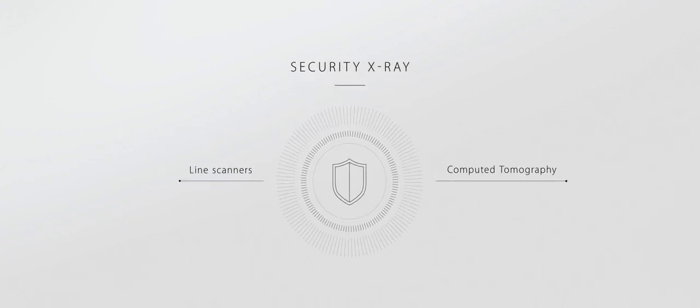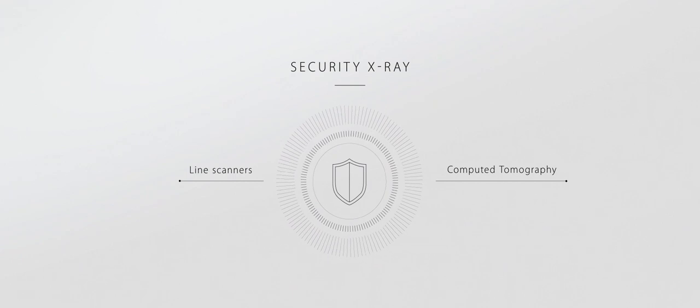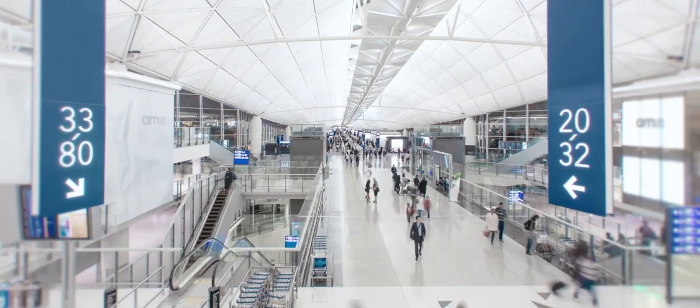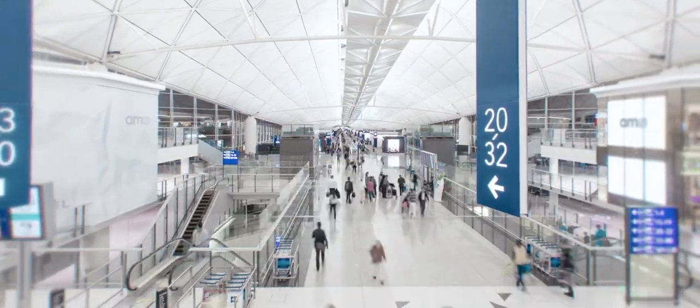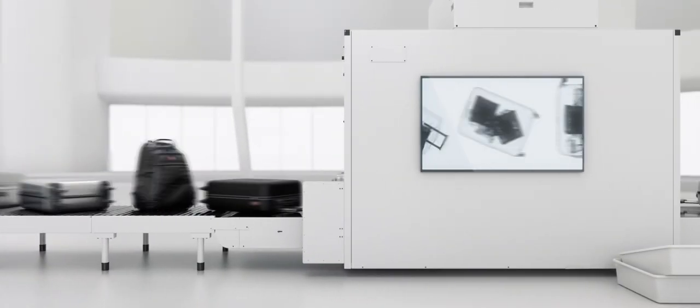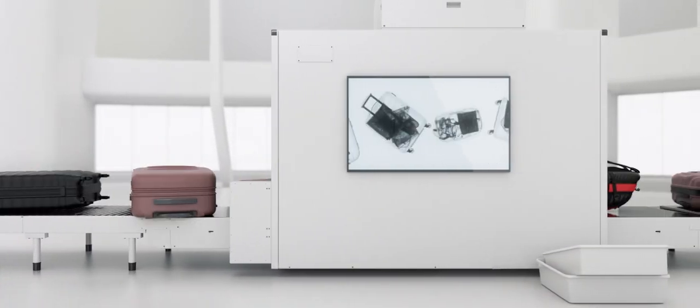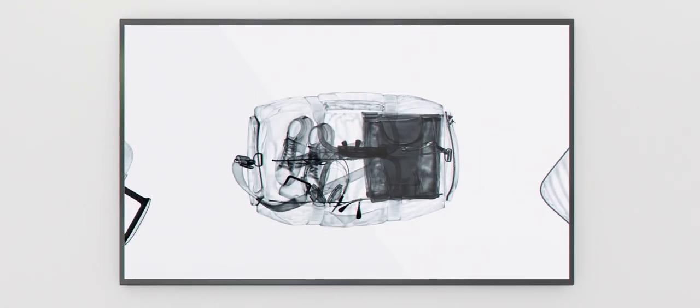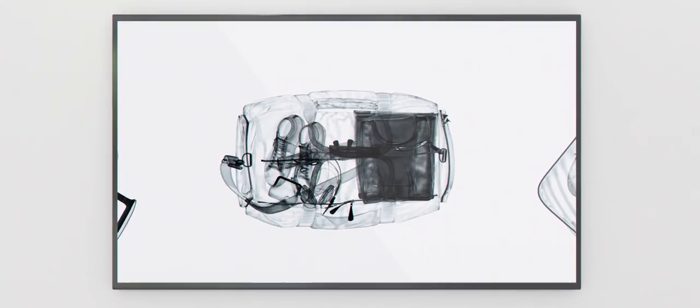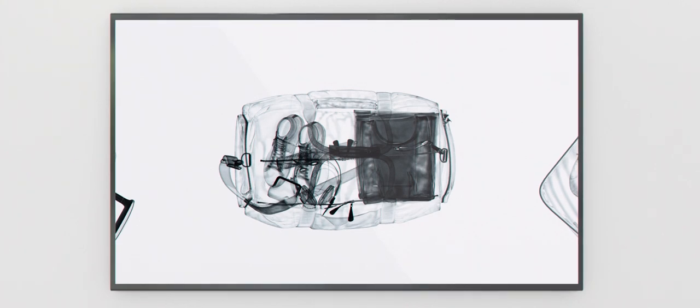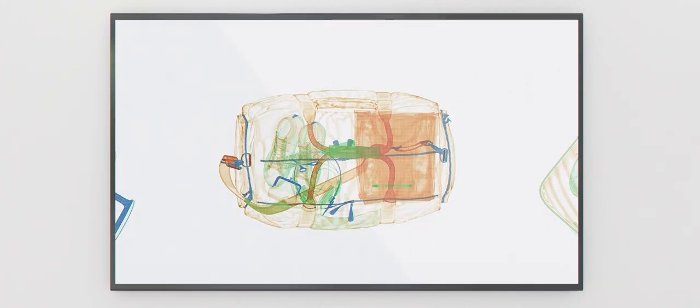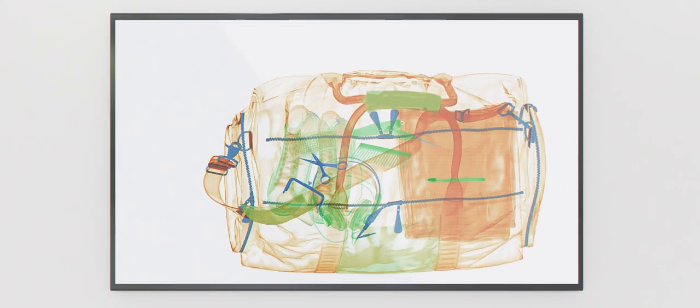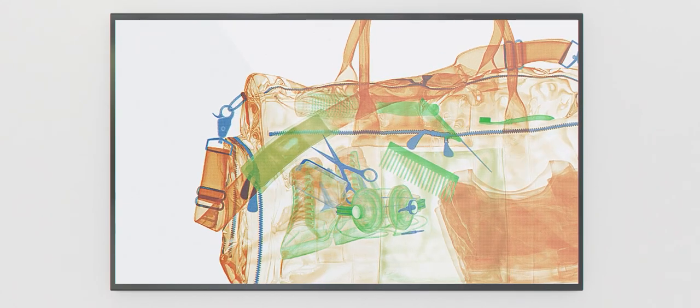In security applications, both line scanners and computer tomography are used. Increasing passenger numbers require systems that allow high throughput without compromising security standards. The trend is to identify dangerous objects based on material composition. Our solutions enable dual energy technology and even render three-dimensional images when using computer tomography.